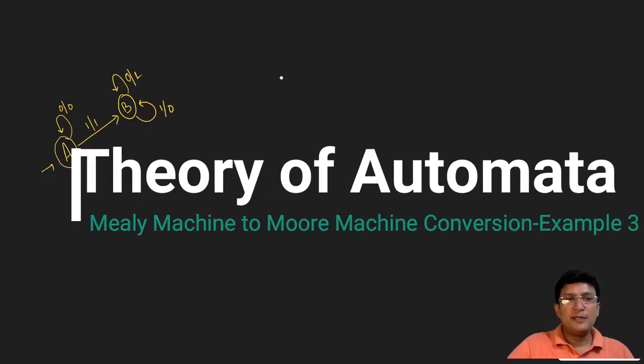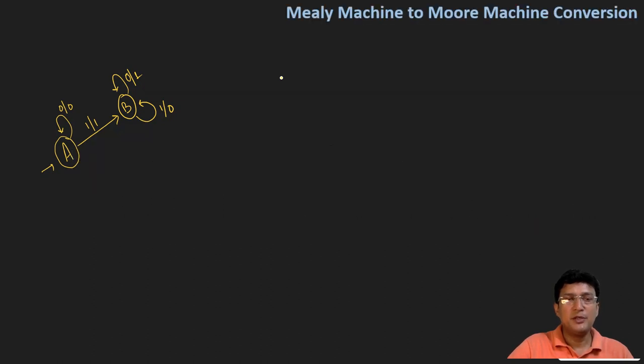Hello everyone, we will take one more example for the conversion of a given Mealy machine to a Moore machine. As discussed in previous lectures, when converting a Mealy machine to a Moore machine, the number of states may rise compared to the Mealy machine.